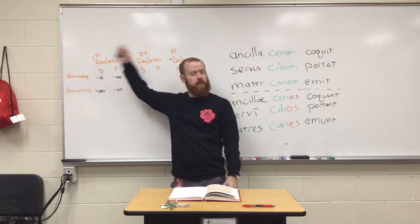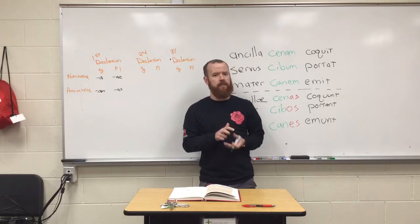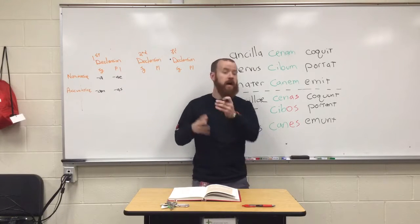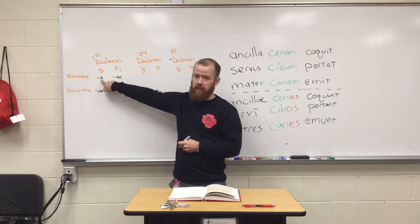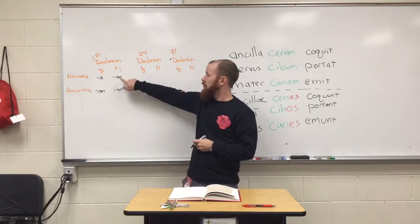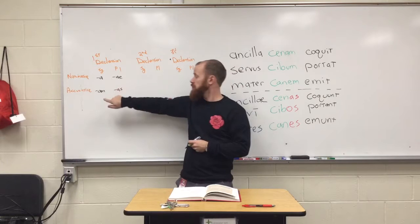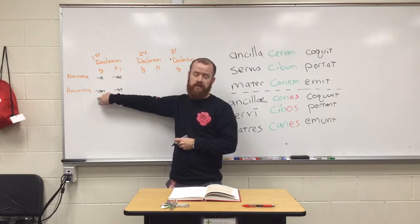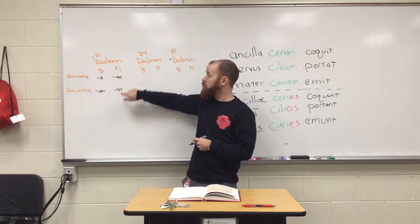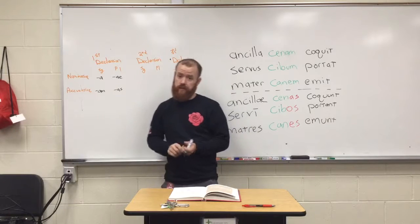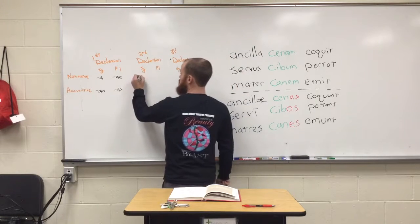First declension — remember, first declension always has those 'a's somehow in their endings. So: '-a' for singular nominative subject; '-ae' for plural nominative subject; '-am' for singular accusative direct object; '-as' for plural accusative direct object.